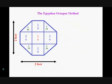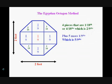We've got 4 pieces that are 1 eighteenth, or 4 eighteenths, which is 2 ninths, plus 5 more 1 ninths, for a total area that is 7 ninths of our original big square.